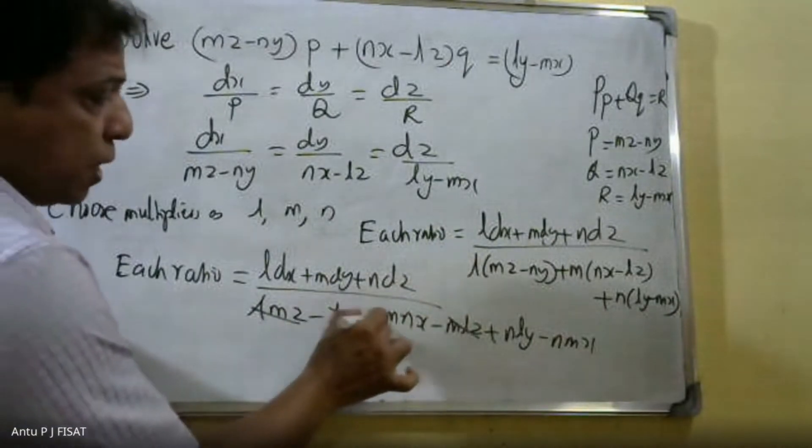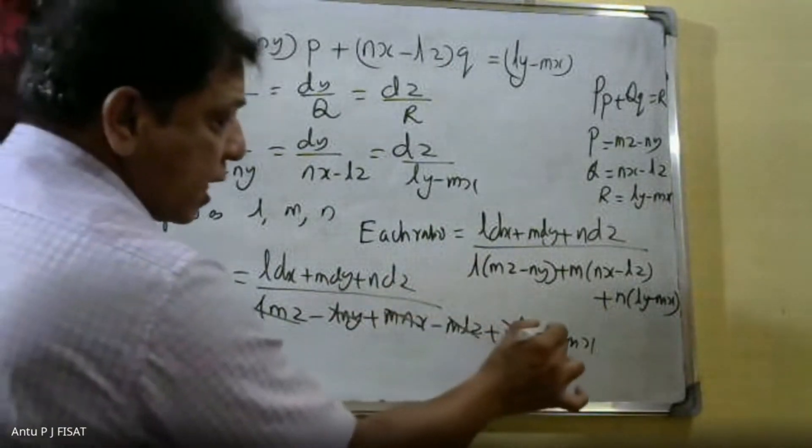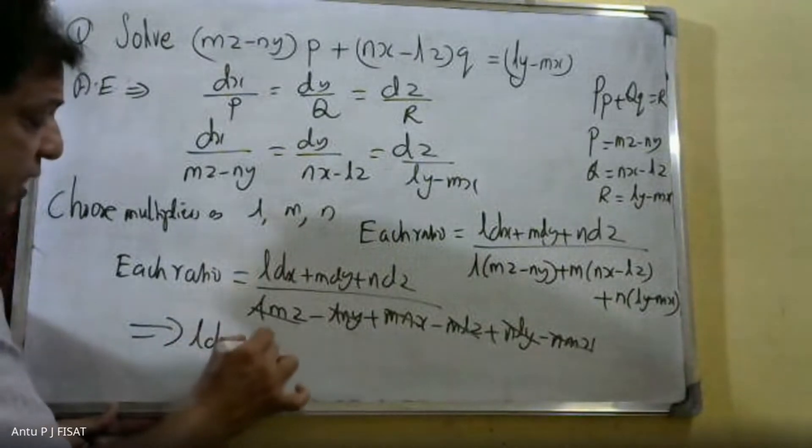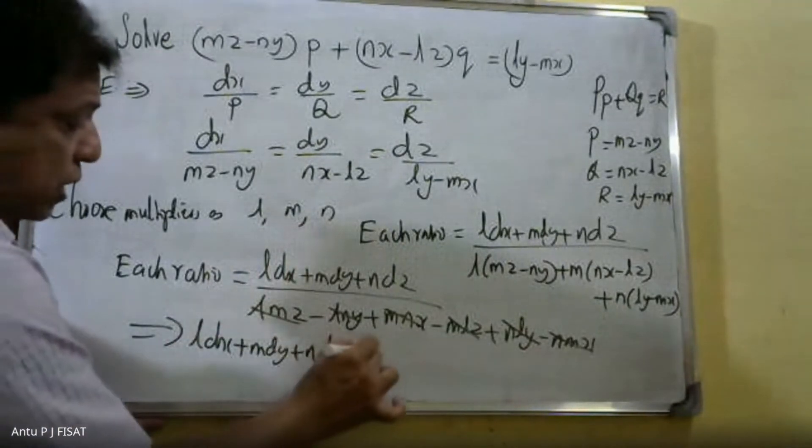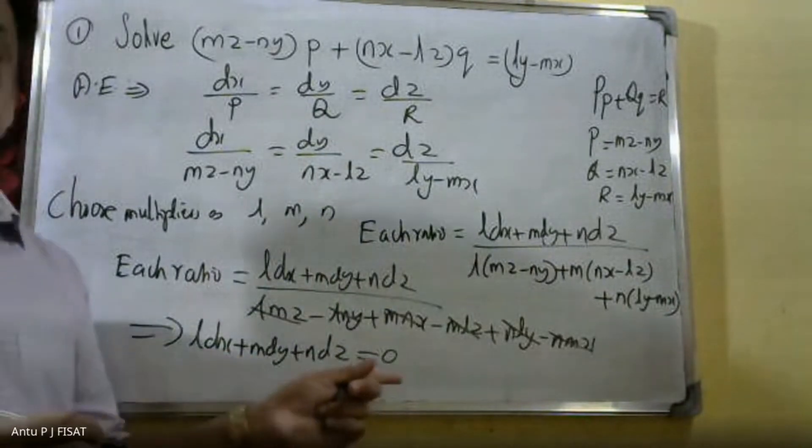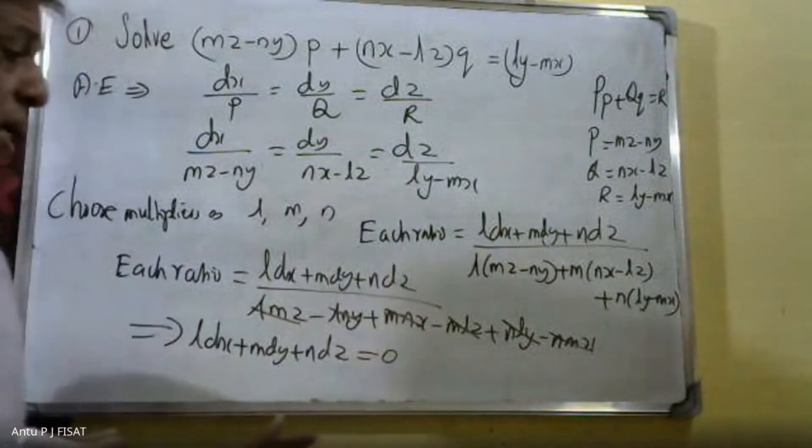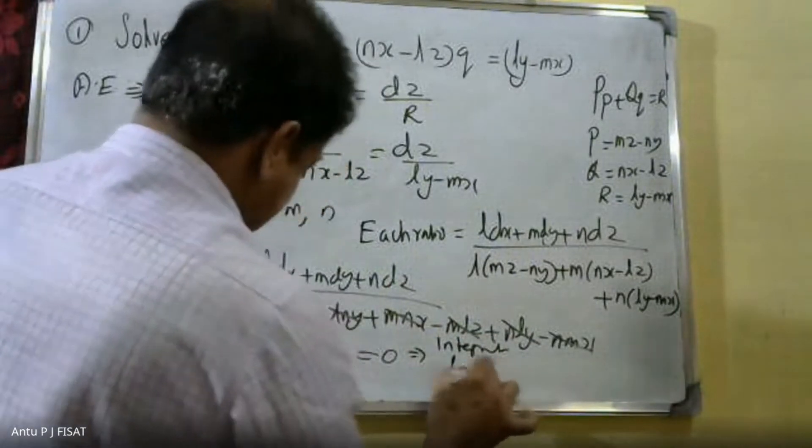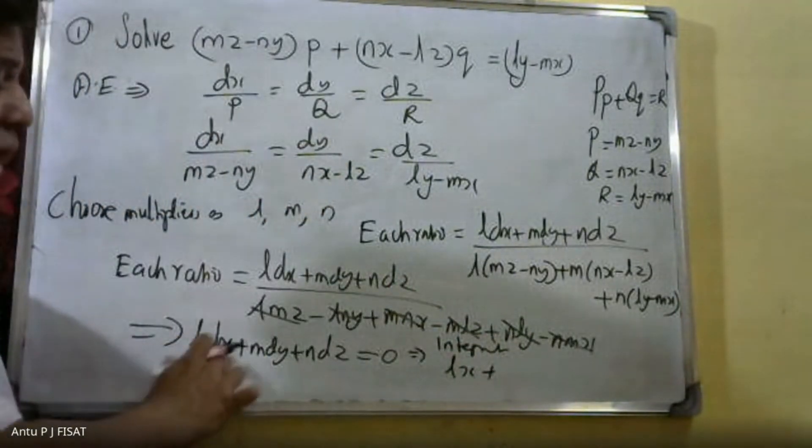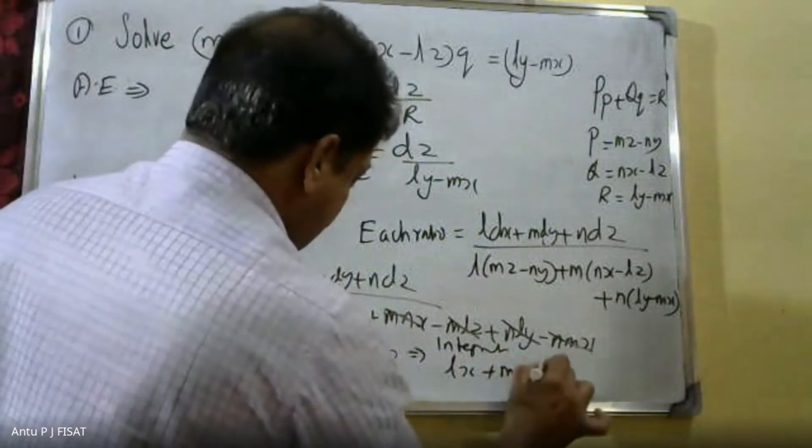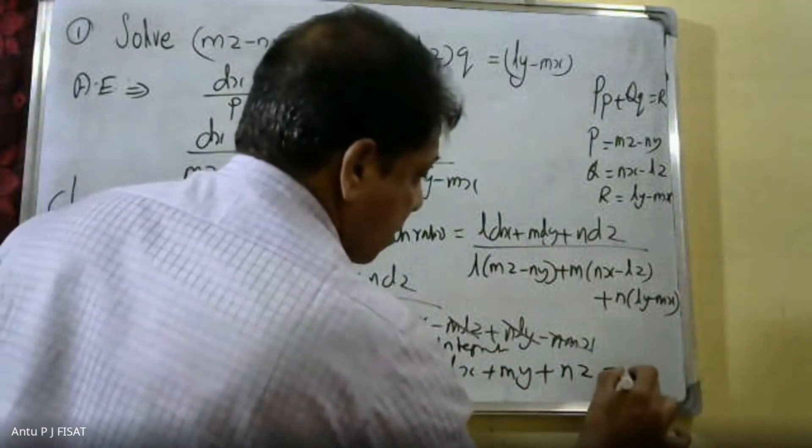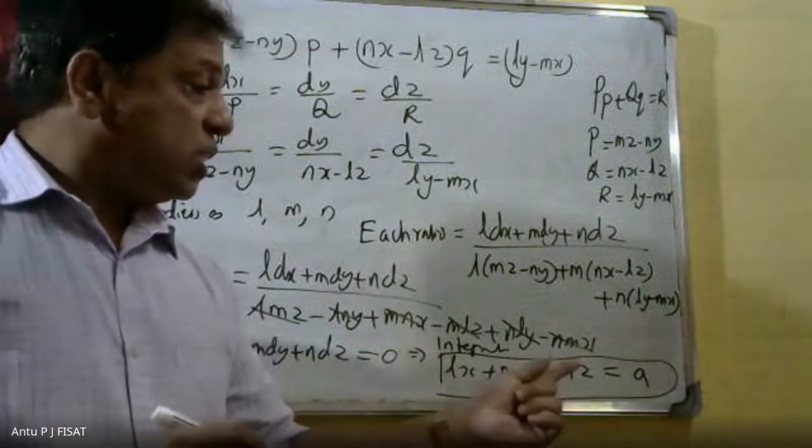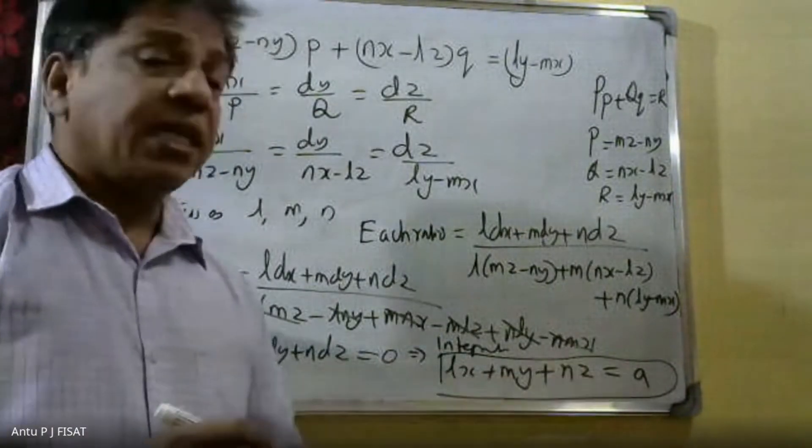The denominator becomes zero. Integrating Ldx + Mdy + Ndz = 0, we get Lx + My + Nz equals a constant. Therefore, Lx + My + Nz = A, the first constant.